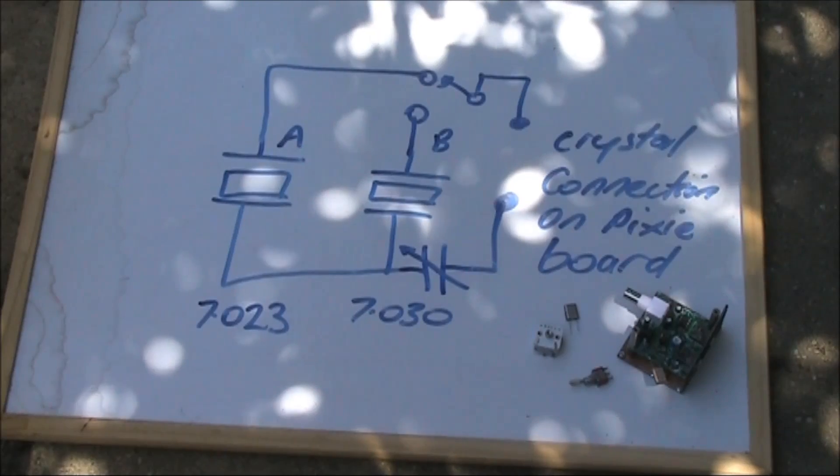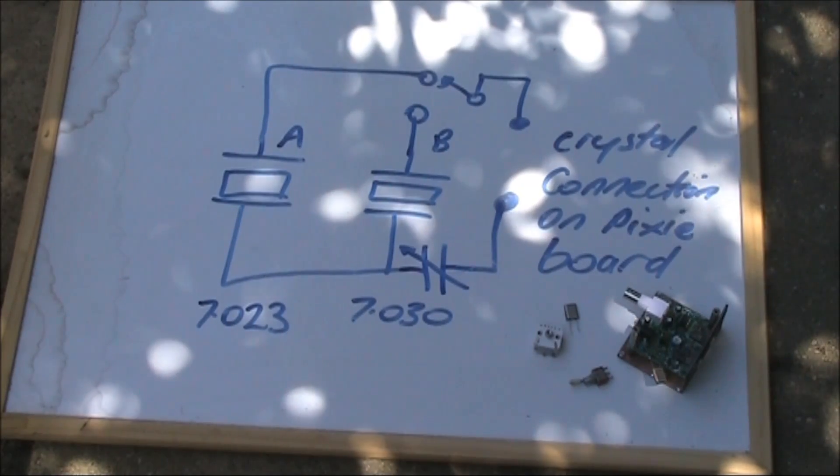One thing to mention though is the frequency offset will be a little bit different at the higher and lower end of the tuning range. That's something you can measure with a commercially made transceiver with a digital dial. Of course, you can always do the variable capacitor modification with two crystals. That gives you the best of both worlds, both a choice of channel and some frequency agility around the crystal frequency.